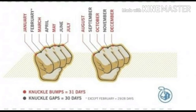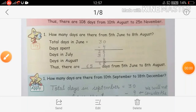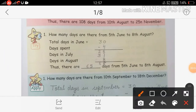February में 28 days होते हैं, लेकिन जब leap year होता है तब 29 days होंगे। और April, June, September, November में होंगे 30 days. (February has 28 days, or 29 in a leap year. April, June, September, and November have 30 days.)